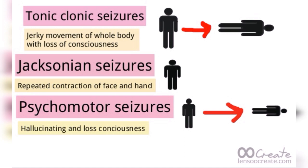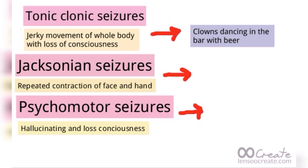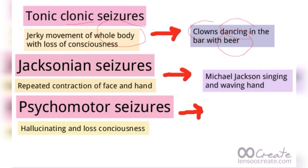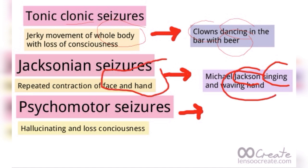There is loss of consciousness in both tonic-clonic and psychomotor seizures. The mnemonic for tonic-clonic seizure is 'clowns dancing in the bar' — clown indicates clonic, dancing represents the movement of the whole body, and bar represents loss of consciousness (as drinking is related to loss of consciousness). The mnemonic for Jacksonian seizure is 'Michael Jackson singing and waving hand' — Jackson is for Jacksonian, singing with the mouth represents use of the face, and waving hand represents the typical hand-and-face finding.